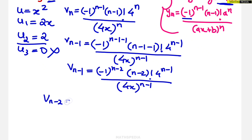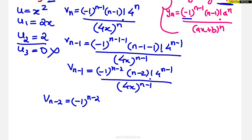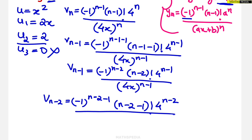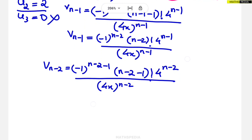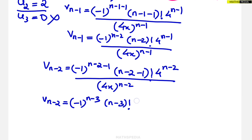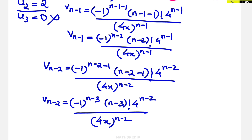For vn-2, substitute n-2 in place of n in the vn formula — not in vn-1. This gives: (-1)^(n-3) × (n-3)! × 4^(n-2) divided by (4x)^(n-2). Now we have all the v values needed.